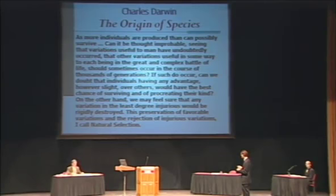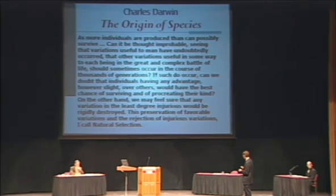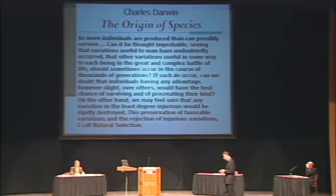So he says: seeing that these variations have occurred useful to us, can it be thought improbable that other variations useful in some way to each being in the great and complex battle of life should sometimes occur in the course of thousands of generations? Can we doubt that individuals having any advantage, however slight, over others would have the best chance of surviving and procreating their kind? On the other hand, any variation in the least degree injurious would be rigidly destroyed. This preservation of favorable variations and the rejection of injurious variations I call natural selection.